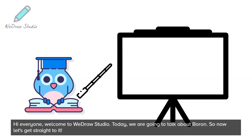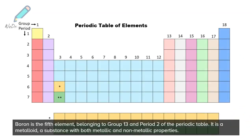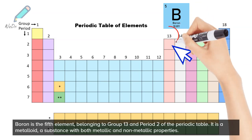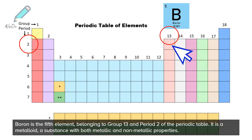Welcome to Wedraw Studio. Today we are going to talk about boron. Boron is the fifth element, belonging to group 13 and period 2 of the periodic table. It is a metalloid — a substance with both metallic and non-metallic properties.